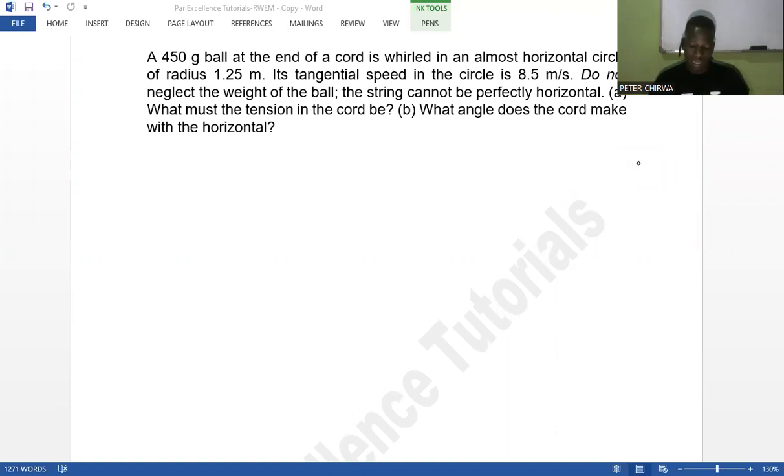The question reads: A 450 gram ball at the end of the cord is whirled in an almost horizontal circle of radius 1.25 meters.